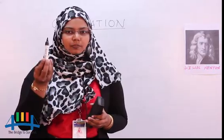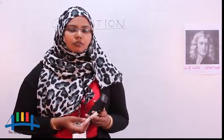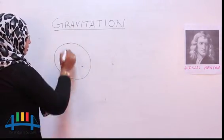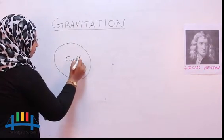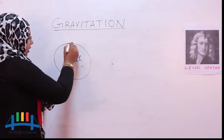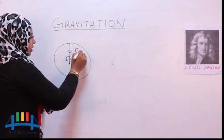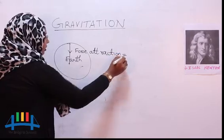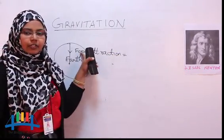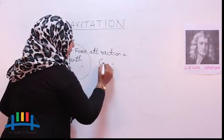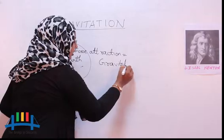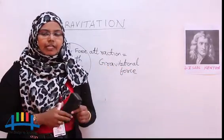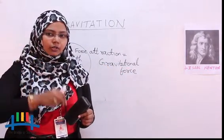Any object when it is thrown upward has to come to the ground — it has to fall on the surface of the earth. Why? Because earth is a massive body and it has an attraction force towards its center. Isaac Newton gave the name to this attraction force: gravitational force. It is because of this gravitational force that any object when thrown upward will fall on the ground.